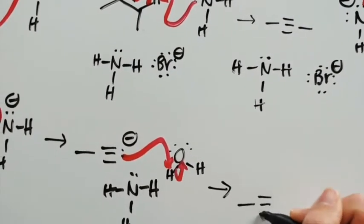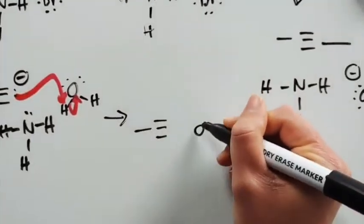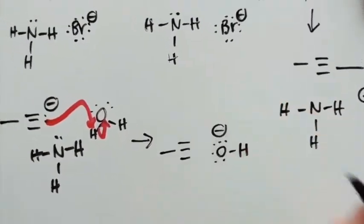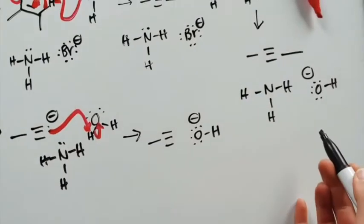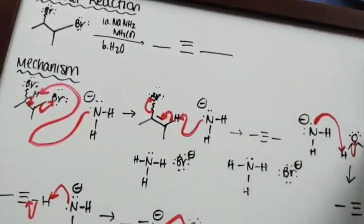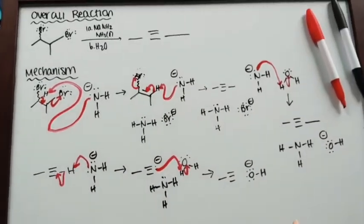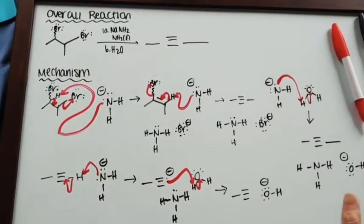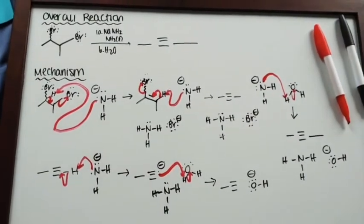And that's going to result in our terminal alkyne with the hydroxide. So in both cases, we do end up with hydroxide. We do end up with NH3, which is really good. But it just depends on if it's terminal or if it is an internal alkyne. So there you go.